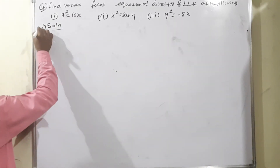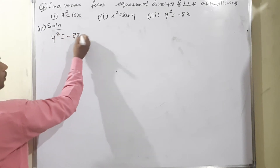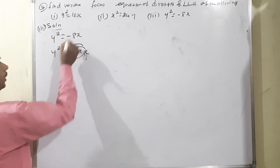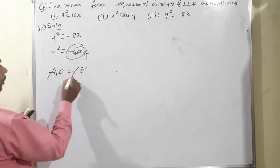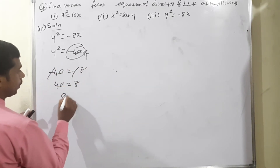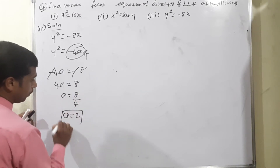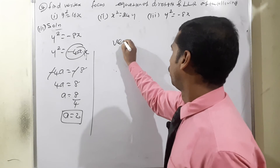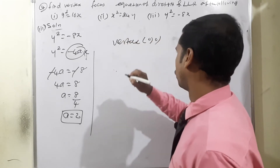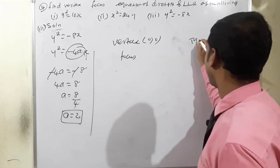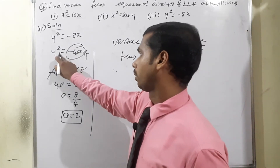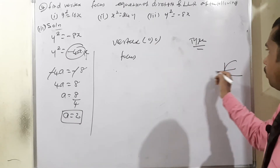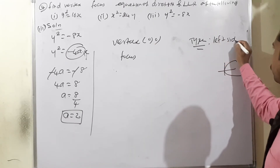Moving to subdivision three: y² = -8x. This matches y² = -4ax. So -4a = -8, negatives cancel, giving 4a = 8, therefore a = 2. Vertex is (0, 0). Since the form is y² = negative 4ax, this is a left side open parabola.